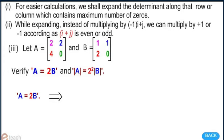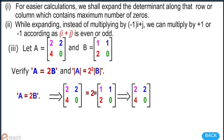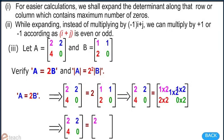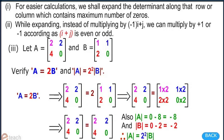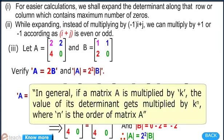Let A and B be two matrices. Verify that A = 2B and determinant of A equals 2^2 times the determinant of B. A = 2B can be represented in matrix form; the determinant of A equals -8 and determinant of B equals -2. Therefore, determinant of A equals 2^2 into determinant of B. In general, if a matrix A is multiplied by k, the value of its determinant gets multiplied by k^n, where n is the order of matrix A.